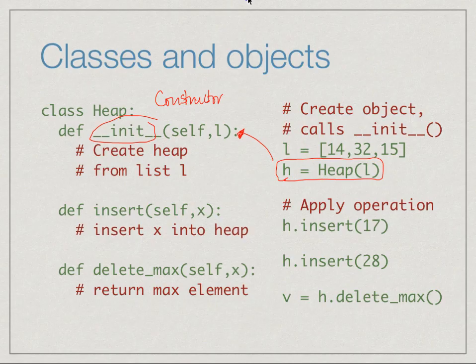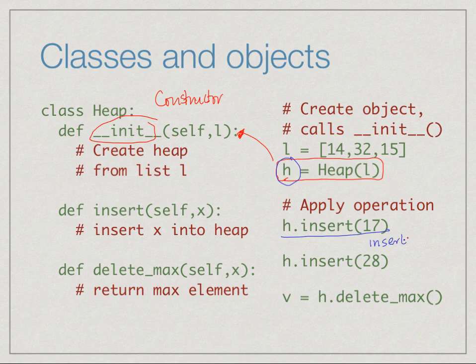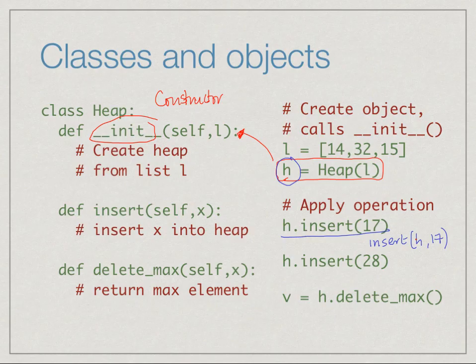As we said, we have functions like insert and delete max defined for heaps. It is like we have a separate copy of this function for each individual heap. In this case, we have created a heap h. We want to tell h, insert in yourself the value 17. We write that as insert with respect to h, so h.insert(17), as opposed to insert(h, 17), which would be the normal functional style of writing this. We would normally pass it the heap and the value. Here instead, we say given the heap h, apply to the heap h the function insert with the argument 17.